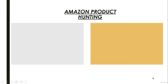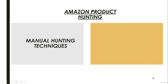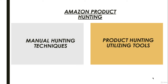There are two main strategies for Amazon product hunting: manual and by utilizing tools. Both are important to hunt a winning product. The right strategy is to get an idea of a product through the manual way and then test the product by utilization of tools. Let's get started with manual product hunting strategies.